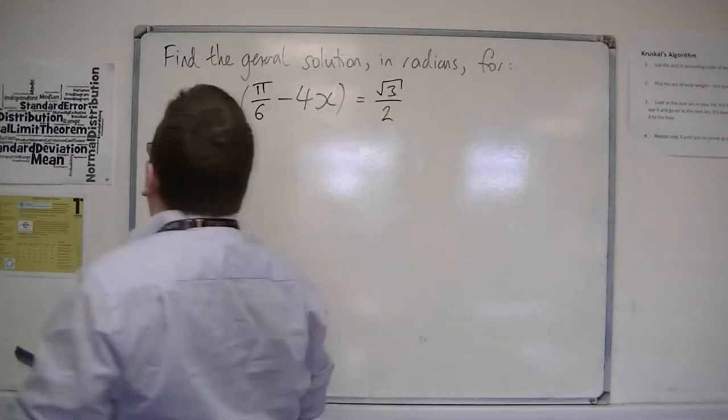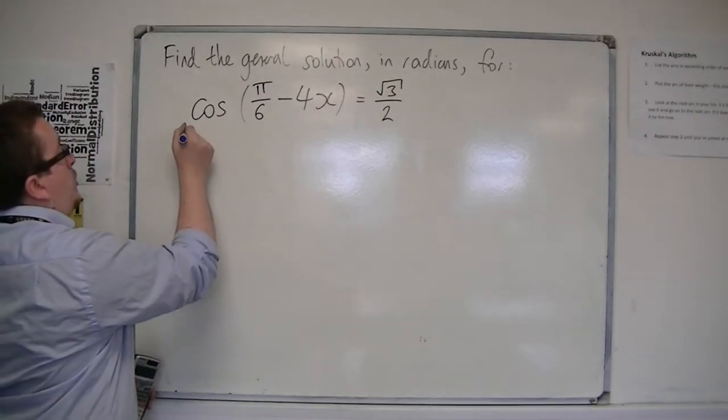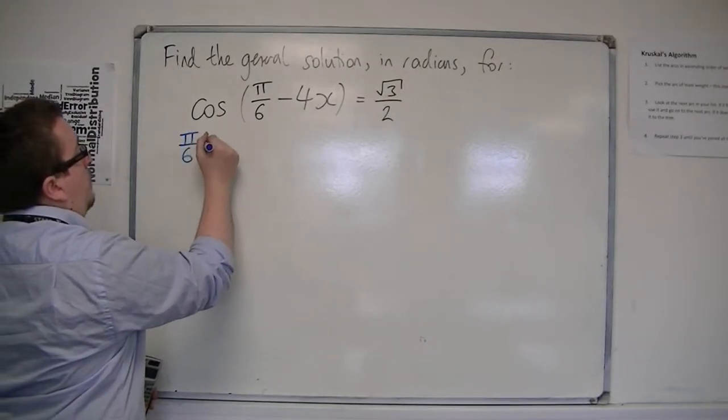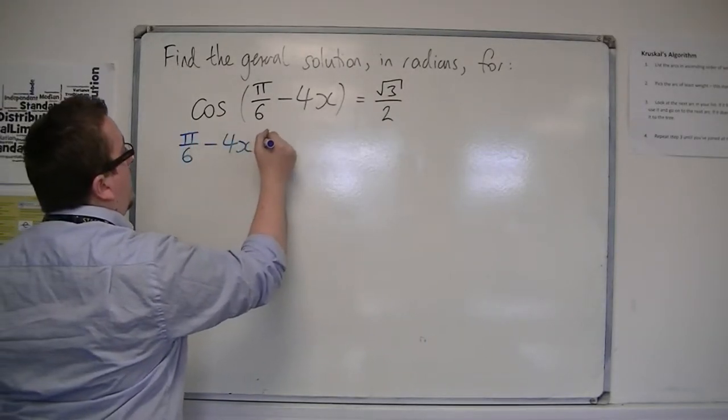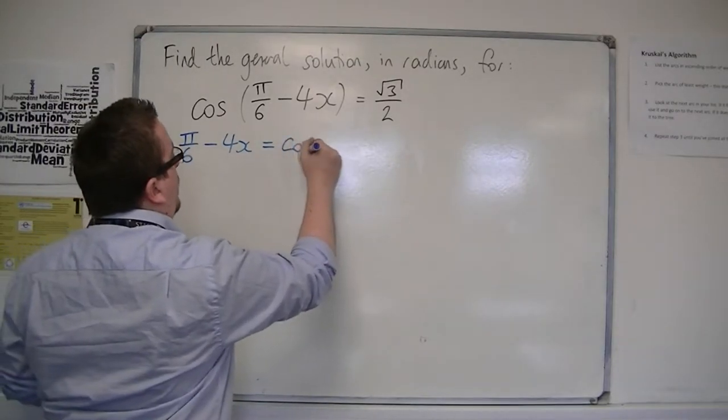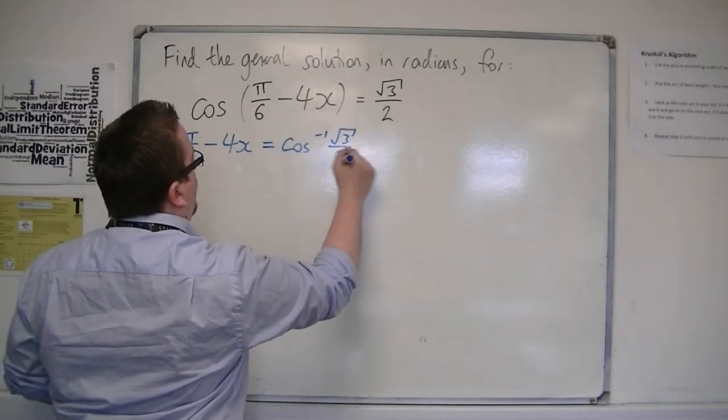So first of all, inverse cosine both sides of the equation, and you're going to get left with pi over 6 take away 4x is equal to inverse cos of root 3 over 2.